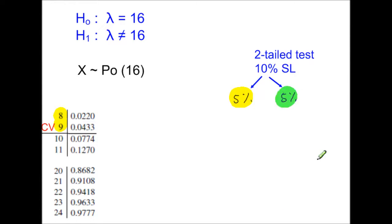For the upper tail, we need to do 1 minus 0.05, so 0.95. And we're looking for probabilities here which are greater than 0.95. So looking down the tables, the first probability that's more than 0.95 is this. Which means that the next one along, 24, will be the critical value for the upper tail.